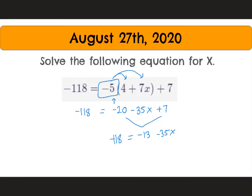Then from here we'll add 13 to both sides. We add 13 to both sides, we're going to end up with negative 105 is equal to negative 35x. Lastly, we divide by negative 35 on both sides, and then we end up with x equals 3.